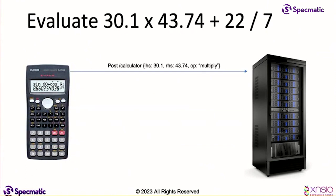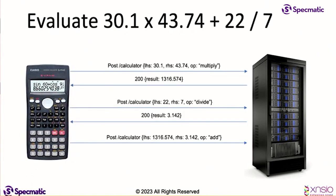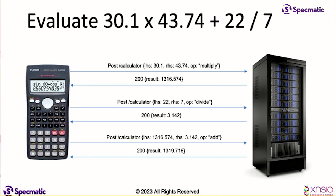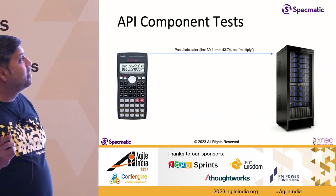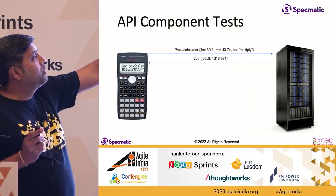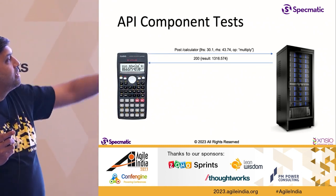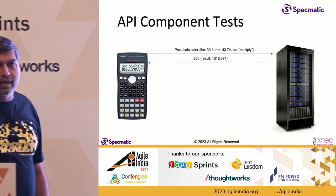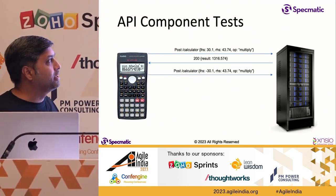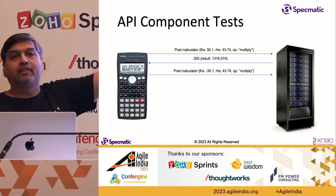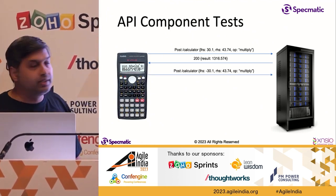Let's convert this into a more API-type looking thing. What kinds of API tests can you think of that you would write on this? You can imagine, like, I would want to test some of these things individually — maybe when I post to slash calculator with this input, I want to get this result back. I want to test each of these operations in isolation.